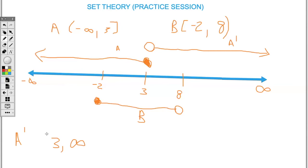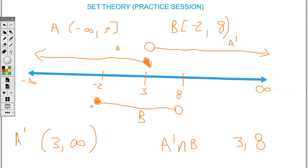The interval for A complement is (3, +∞) — open at 3 and open at positive infinity since infinity is not a number. If we want A complement intersect B, we look at where they overlap. The overlap is between 3 and 8. At 3 it's open because one of them is not using 3, and at 8 it's also open because neither is using it. So A complement intersect B = (3, 8).